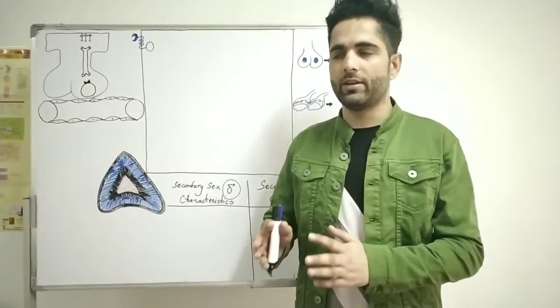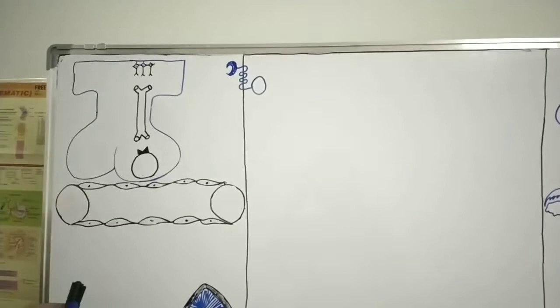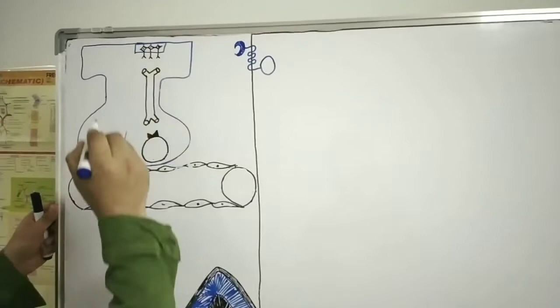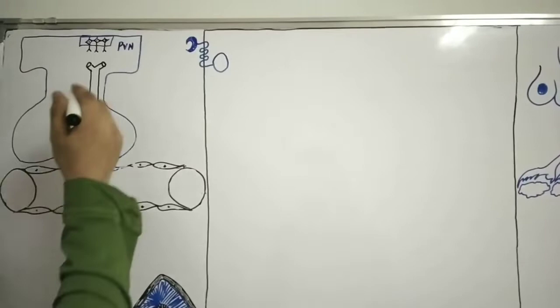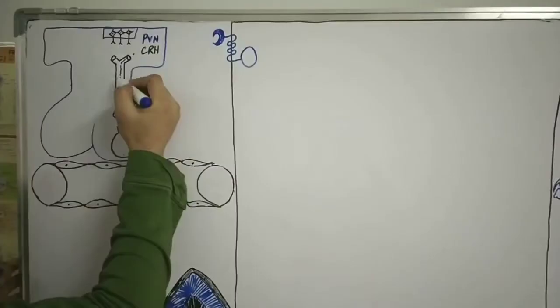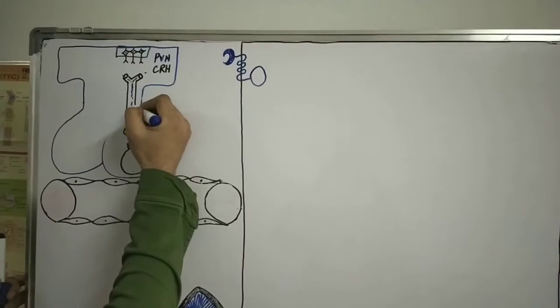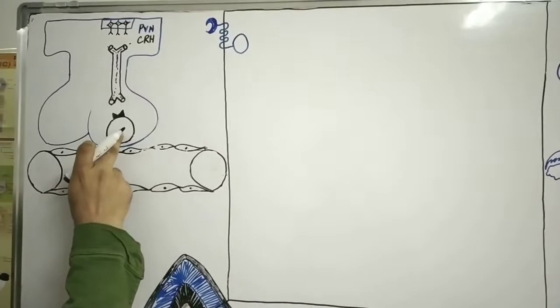Here you can see the hypothalamus and the pituitary gland. In the hypothalamus, a group of cell bodies is called a nucleus. There is a nucleus known as the paraventricular nucleus (PVN). This paraventricular nucleus secretes a hormone known as CRH — corticotropin-releasing hormone. This CRH travels down through the hypothalamo-hypophysial portal system and eventually reaches the anterior pituitary, where there are cells called corticotropes.